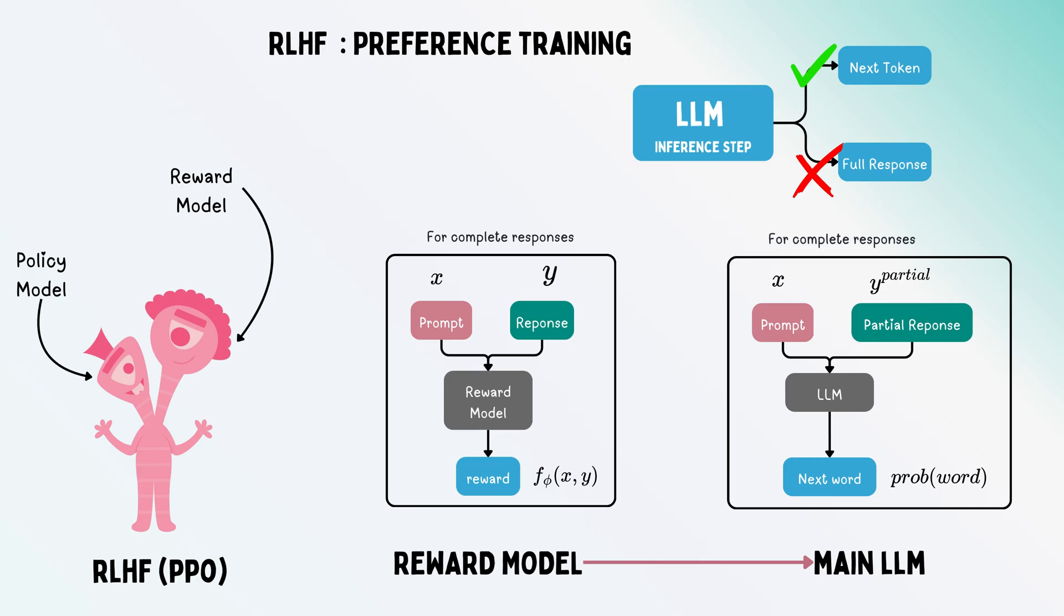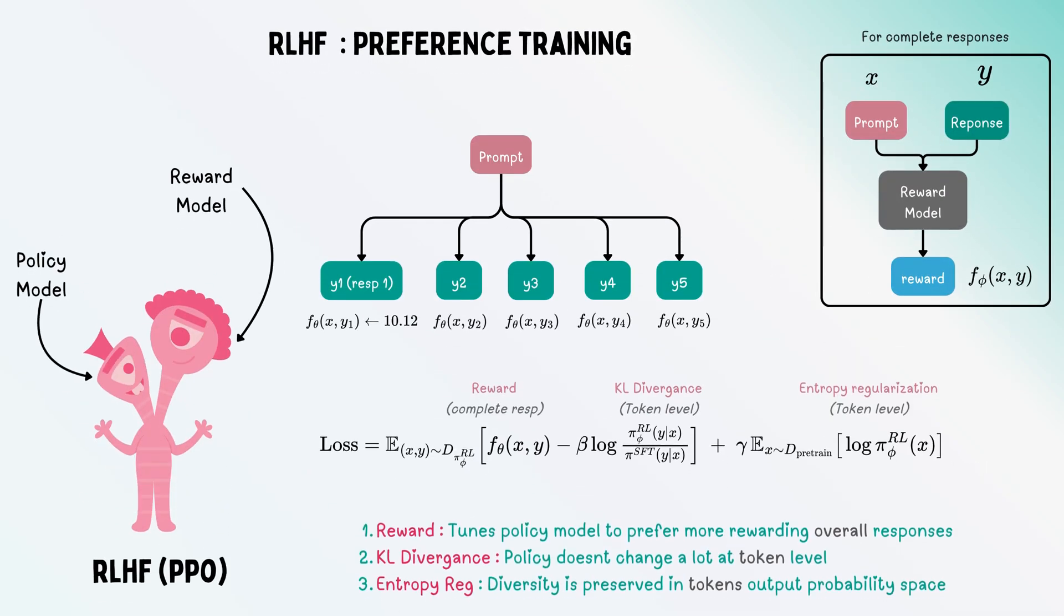You get the overall reward and tune through it. But the tuning isn't just based on the whole response—there are additional terms. The first additional term is KL divergence.